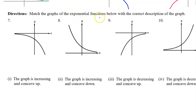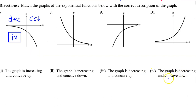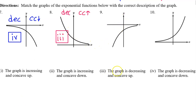Match the graphs of the exponential functions below with the correct description of the graph. For number seven, the graph is falling from left to right — it is decreasing. Also, it's bending downward like part of an upside down bowl, so it is concave down. Decreasing and concave down is Roman numeral four. Number eight is decreasing from left to right and it is concave up. Decreasing and concave up is Roman numeral three.